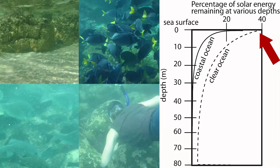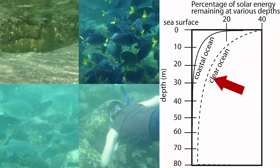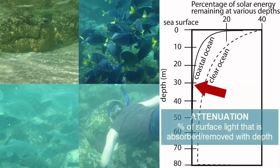You can also see from this graph that the percentage of solar energy that makes it to various depths decreases when we enter the turbid coastal area with lots of suspended material. Attenuation is the term we use to describe an increasing percentage of absorption and thus less of the original light left as we descend. Turbid waters have a higher attenuation than clear waters.